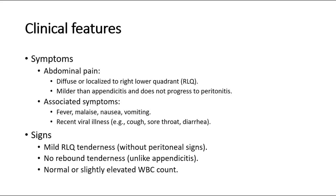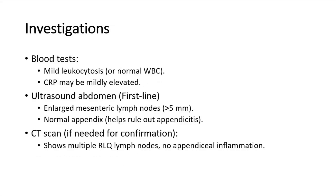Signs include mild right lower quadrant tenderness without peritoneal signs, no rebound tenderness — unlike appendicitis — and a normal or slightly elevated WBC count. For investigations, blood tests may show mild leukocytosis or normal WBC, and CRP may be mildly elevated.